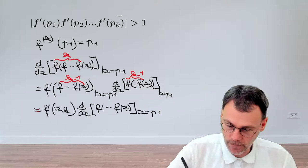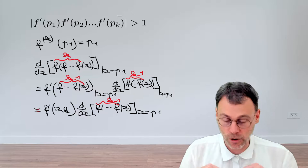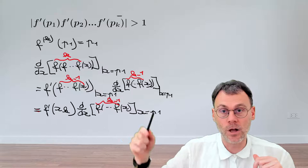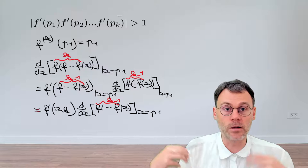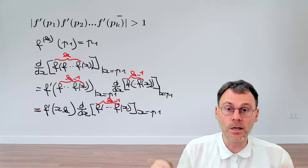So again, here we have k minus 1 applications of the function f. The interesting part is that what we have here in terms of derivative looks very similar to what we started out with. The only difference is that now, rather than having k applications of f, we have k minus 1 applications of f.